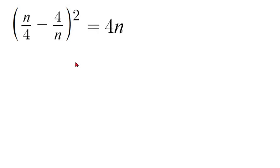In order to have 4n as the denominator, this left fraction we're going to multiply by n and the right fraction we're going to multiply by 4.